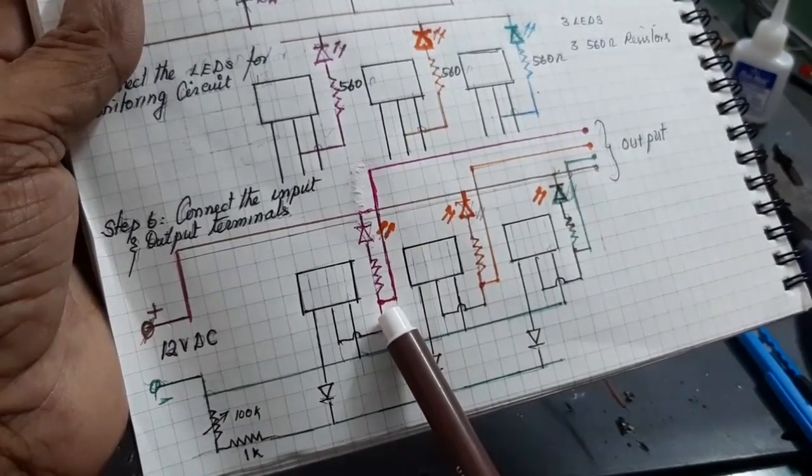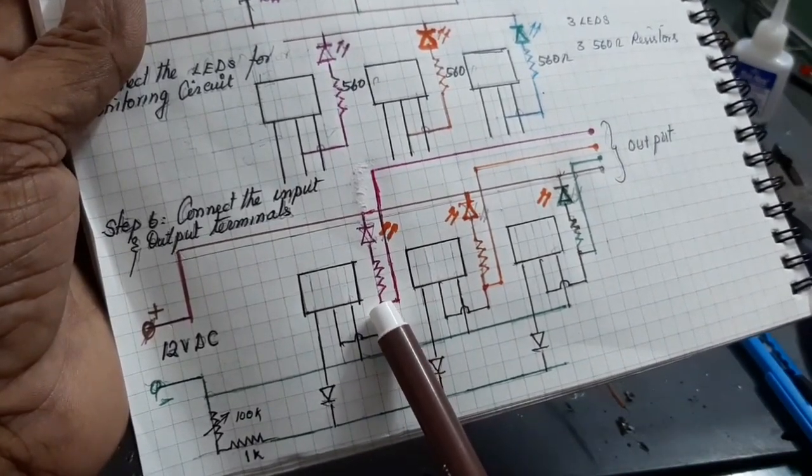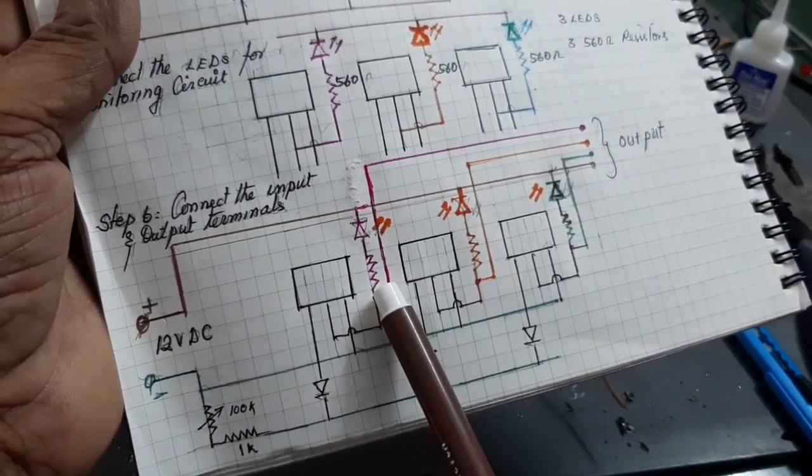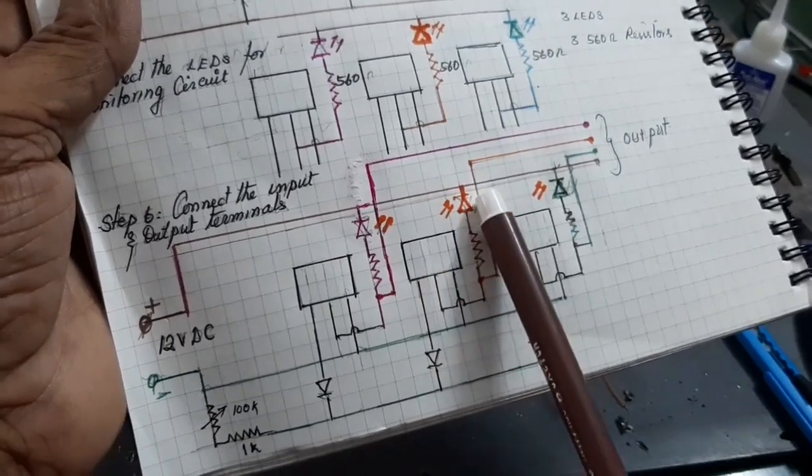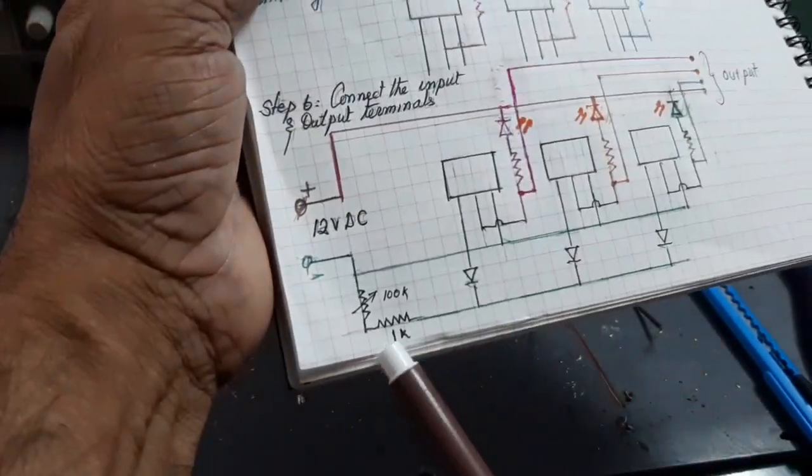Now, here look at the bottom of the resistor 560 ohm. Connections are taken from the bottom of the 560 ohm resistor. All the 3-phase. And it is taken to the output. Here, look at this.